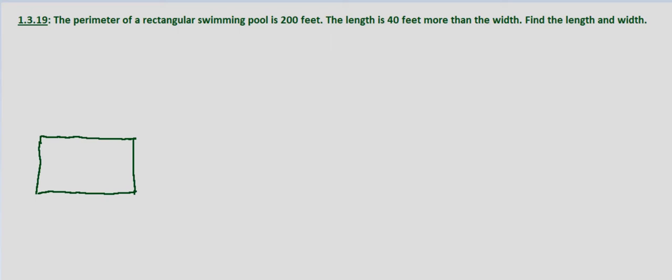So let w equal the width, and then w plus 40 equals the length. We know the perimeter is 200 feet.